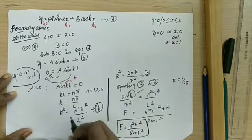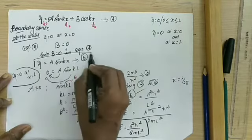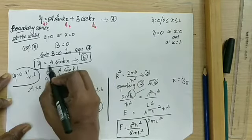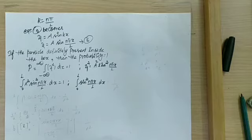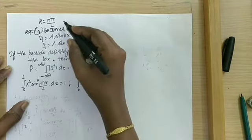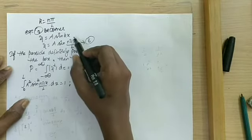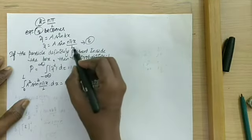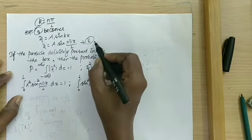Next, we find the wave function. Starting from psi equal to A sin kx (equation 5), and substituting the wave vector k equal to N pi by L, equation 5 can be written as psi equal to A sin(N pi x by L), which we mark as equation 6.